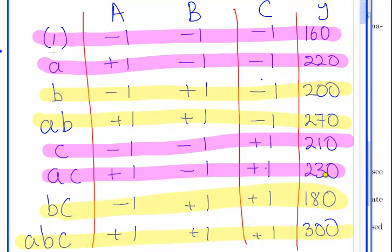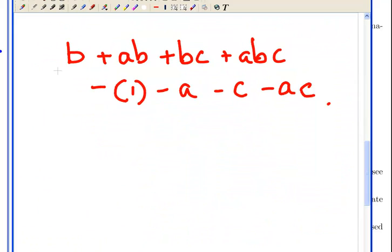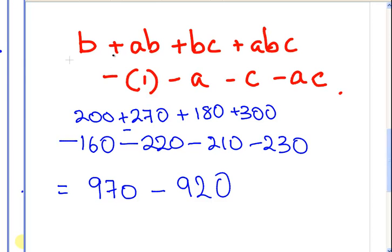200 plus 270 plus 180 plus 300 where factor B was high, and then subtract everywhere factor B was low. Working it out, we get 50. That's the contrast for main effect B, for factor B.